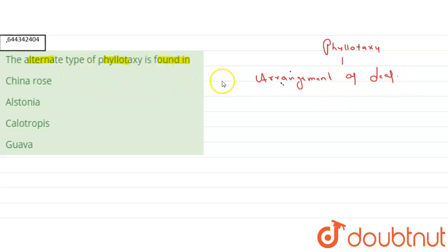So the alternate type of phyllotaxy - if we are talking about alternate type of phyllotaxy, then there is only one leaf at a node, and another node has another leaf but in alternate direction. Such type of phyllotaxy is known as alternate phyllotaxy.